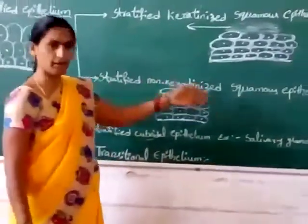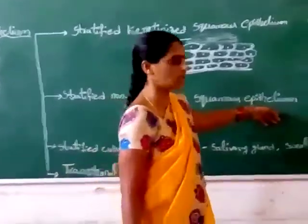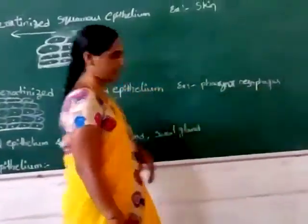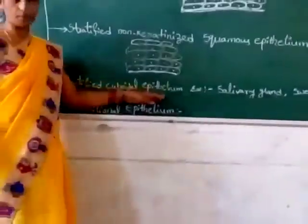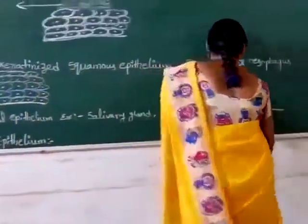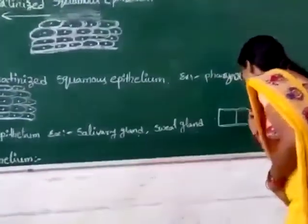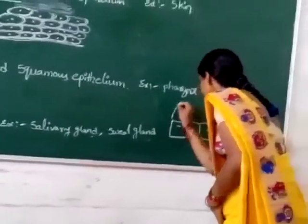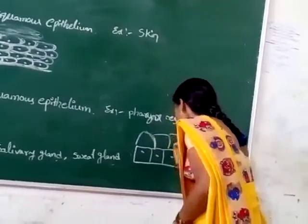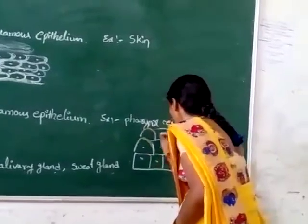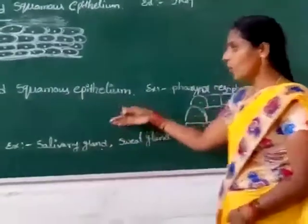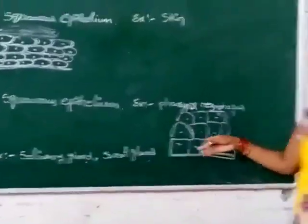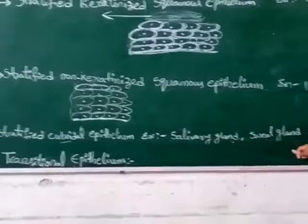That is why it is stratified non-keratinized squamous epithelium. Next is stratified cuboidal epithelium. It is also multilayers and cells are cube-like structures. It is located in salivary glands and sweat glands.